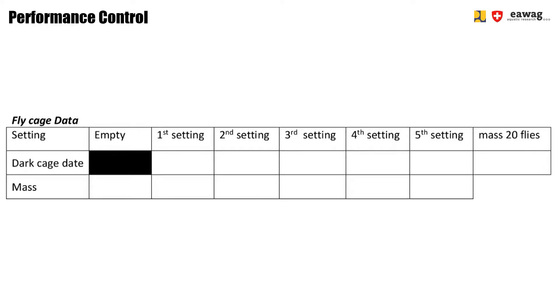In this step we first fill in the weight of an empty cage and we then fill in the weight of the loft cage after it has received flies from each dark cage. On the middle row you see the date of the dark cage and under there you see the weight of the loft cage after it has been filled with flies from that dark cage.